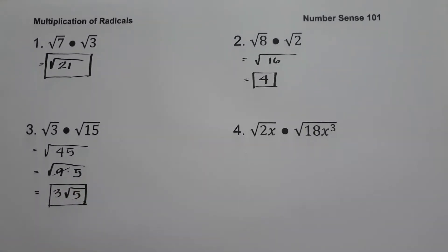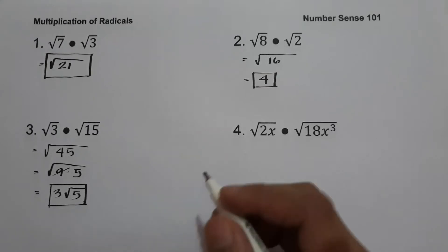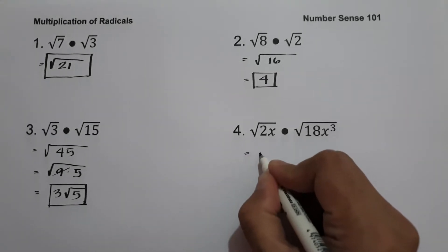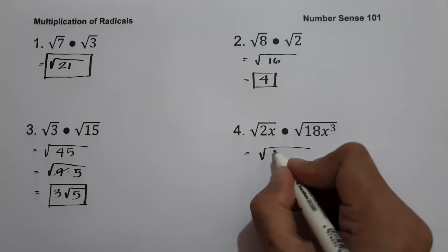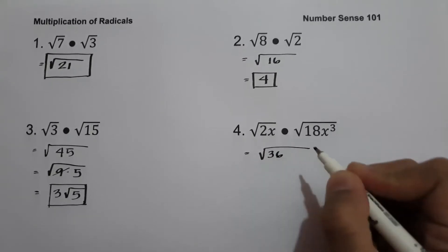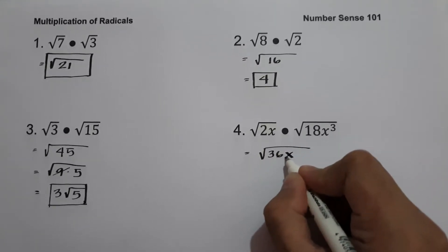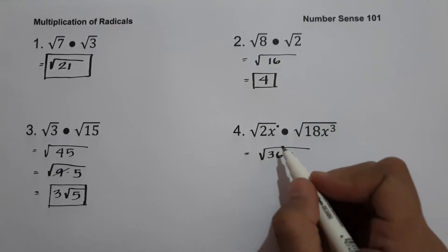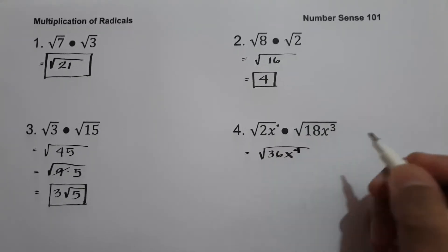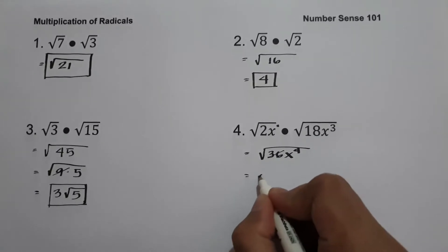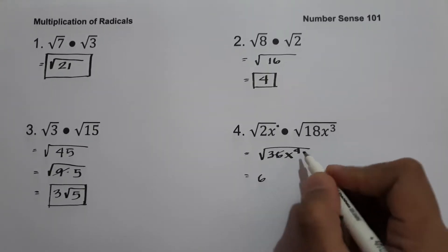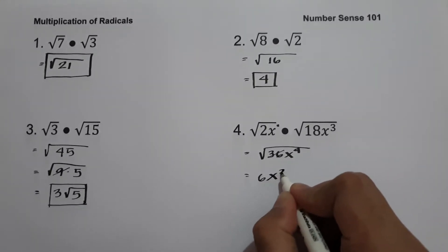On example number four we have square root of 2x multiplied by square root of 18x cubed. Since we have the same index, 2 multiplied by 18 is 36, and we copy the variable x and add the exponents to get x to the 4th. The square root of 36 is 6, and the square root of x raised to 4 is x squared.